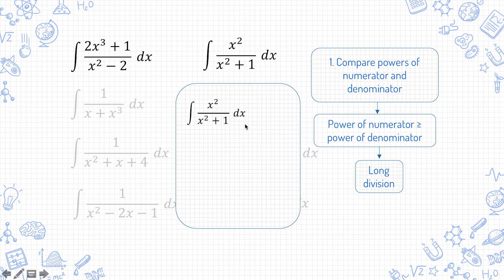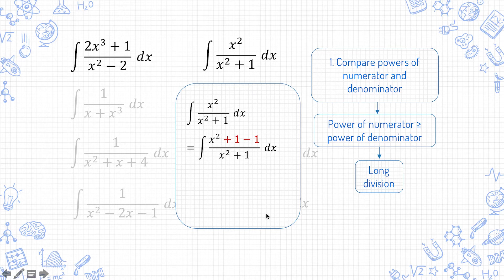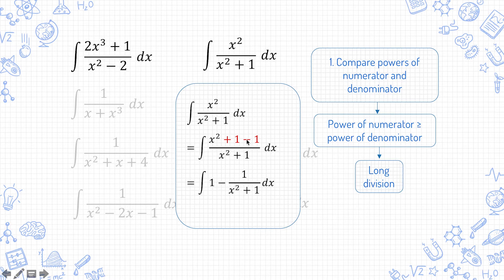To divide x squared by x squared plus 1, you can think of it this way: part of the numerator is a multiple of the denominator. So how do you make x squared become a multiple of x squared plus 1? You can do a plus 1 minus 1 here, because it doesn't change the overall expression. Then the first part, x squared plus 1, is just 1. And the second part — the remainder — is minus 1 over x squared plus 1. However, if you're not confident doing this, you can still fall back on long division and either way you'll just continue solving the same way.